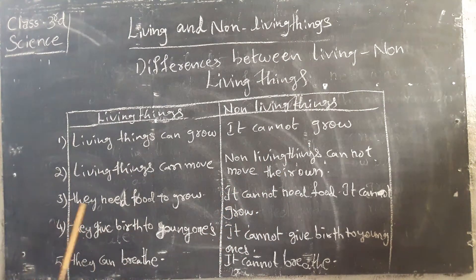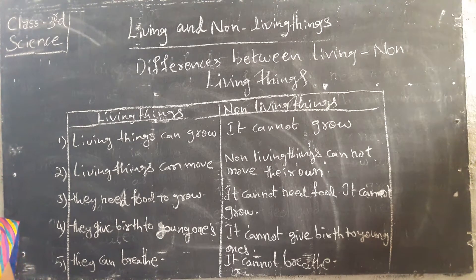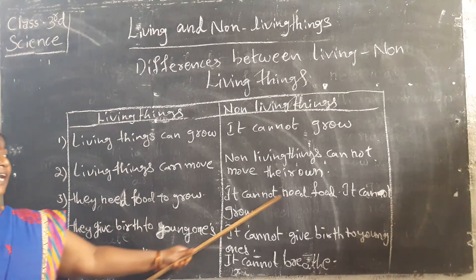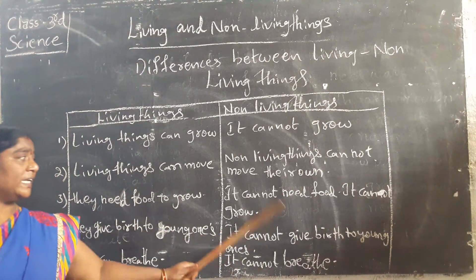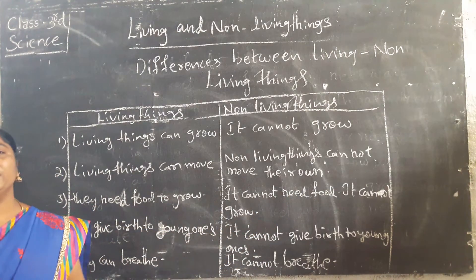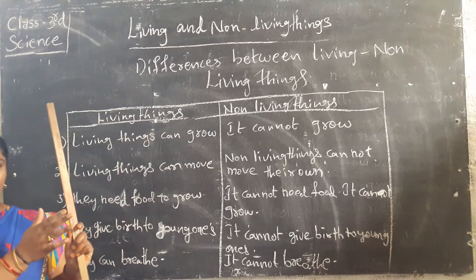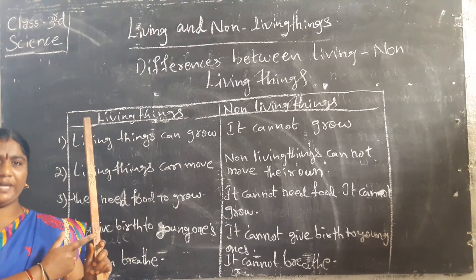Living things need food to grow. The living things take food because they have to grow and they have to get energy from food. Non-living things cannot need food — they cannot grow. This stick cannot eat. The stick will not take food.